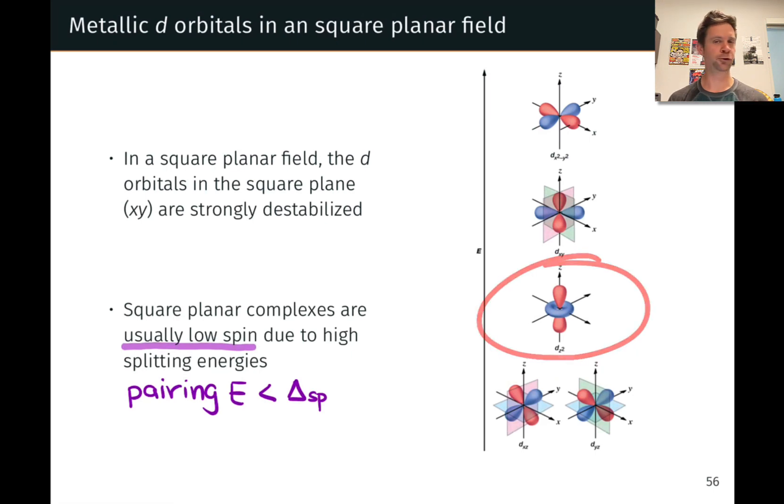The dz² orbital isn't too bad. It's just got the donut in the square plane, and that's it. And then the dx²-y² orbital, well, its lobes are pointed directly at the ligands, so it's destabilized the most, and dxy shows up in the middle.